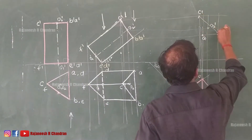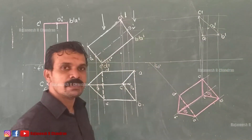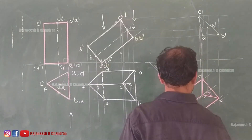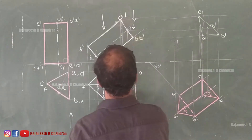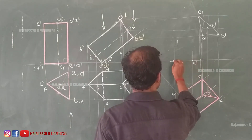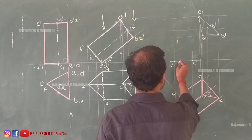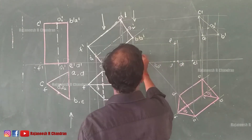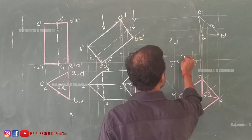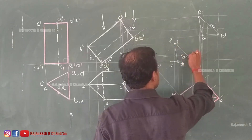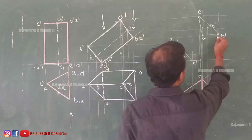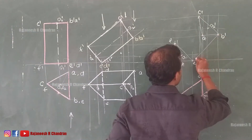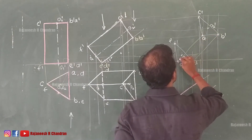Now we can connect A dash to B dash, B dash to C dash, and C dash to A dash. Once we have completed one base, it will be easier for us to complete the other. Through E, through D, and through F, draw projection lines. So this will be our E dash, this will be our D dash, and this will be F dash — O1 dash. So E dash, D dash, F dash. Now we can see that both bases have been completed. Connect B to E, connect A to D, and connect C to F.